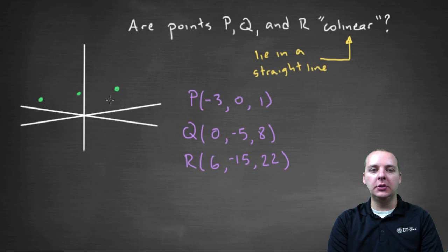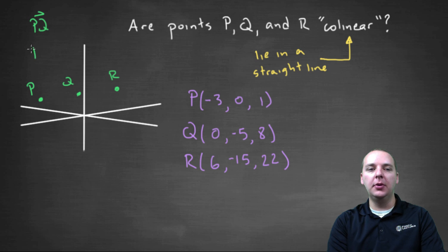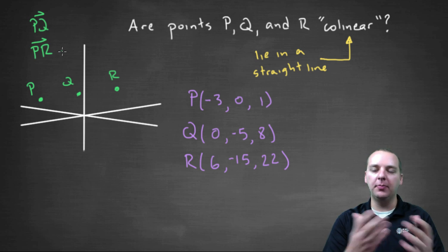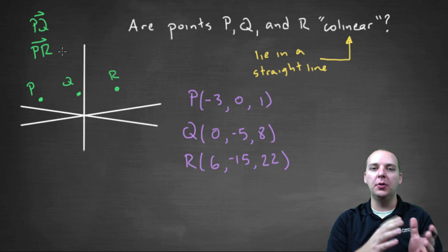So how do we do this? If you have points P, Q, and R—I'm just arbitrarily putting these dots down—what we can do is create two vectors. We can build vector PQ and vector PR. This isn't the only way to do it, but for our purposes we'll use PQ and PR.